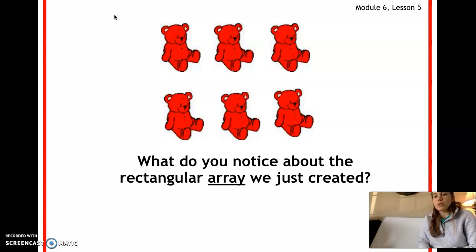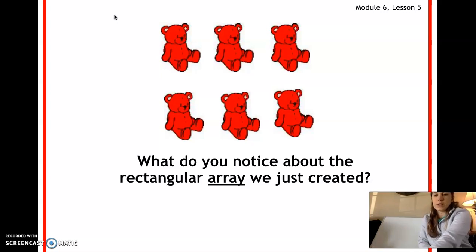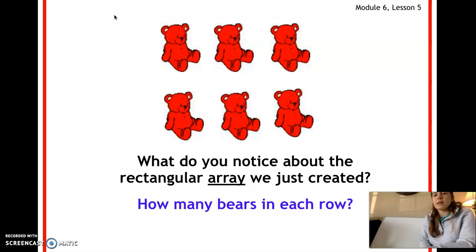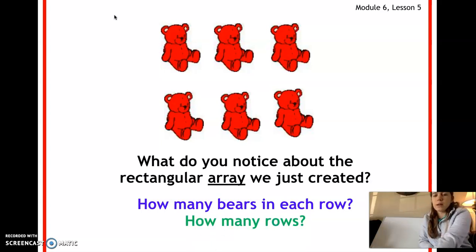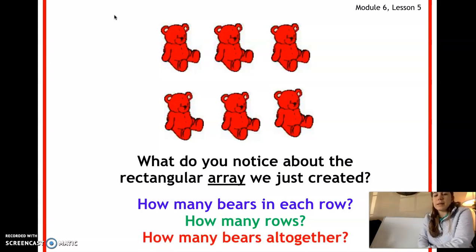So how many rows do we have? We have two rows. How many bears are in each row? Three. There are three bears in each row and two rows. Now how many bears are there all together? Six. You can do three plus three, or you can count the bears for this problem.